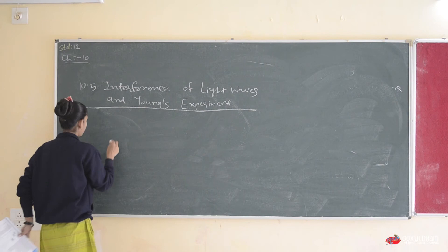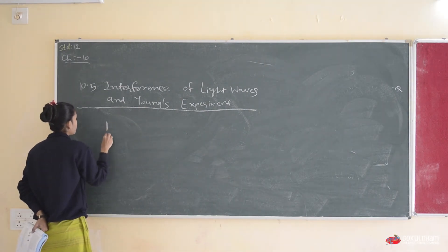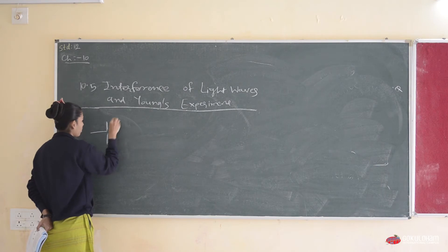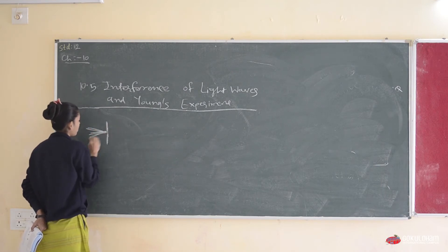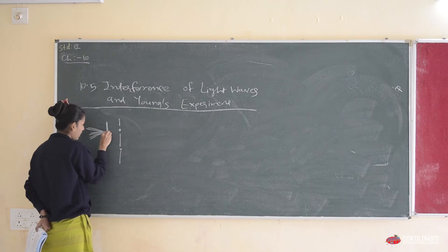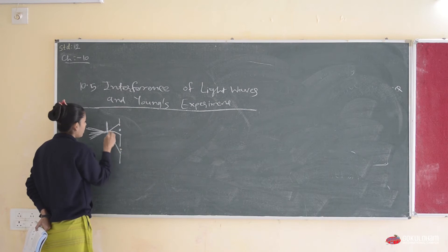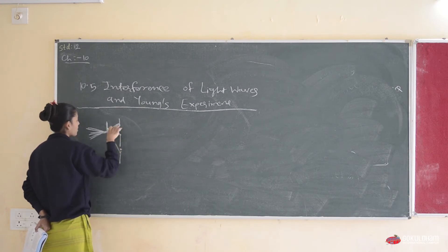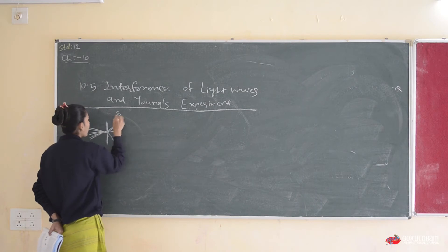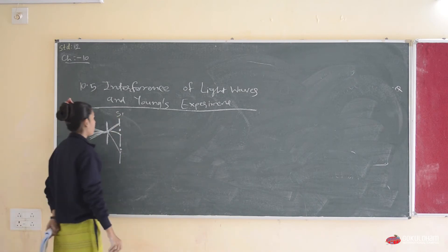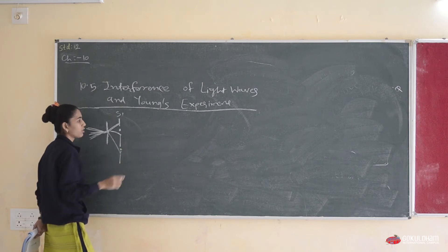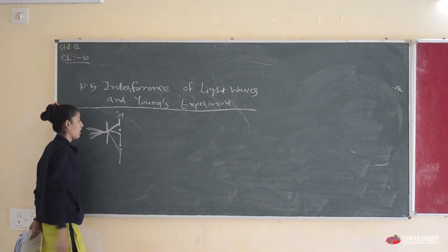First, consider a scenario where we have two screens. When light is incident from one screen, it spreads. On the screen in between, two points or dots are formed. The light then travels to both of these points and further. For simplicity, we consider only one ray. Each secondary point acts as an individual source — a secondary source — as per Huygens' principle.